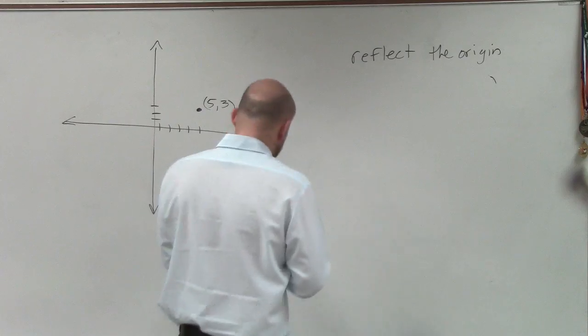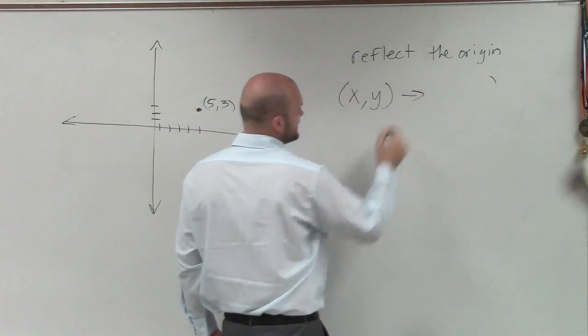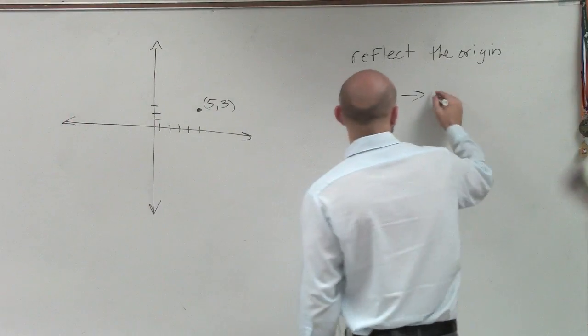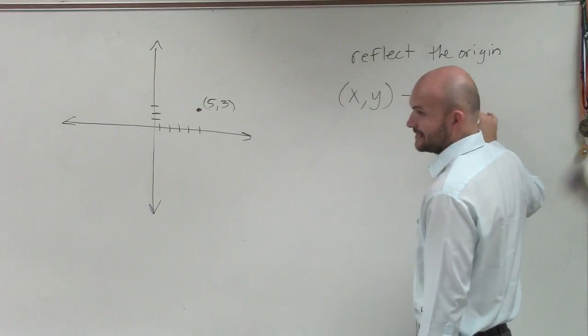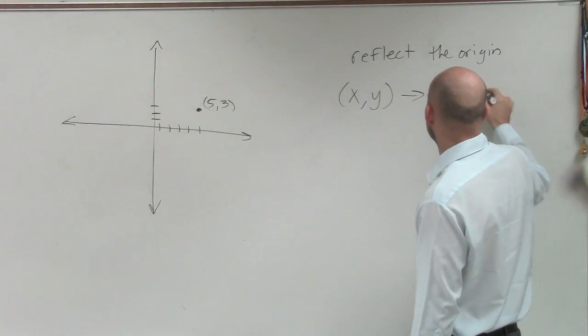So when reflecting over the origin, what we're going to do is reflect both the y-axis and the x-axis. Remember, reflecting the x-axis or reflecting the y-axis made our x negative, and reflecting the y-axis made our y negative.